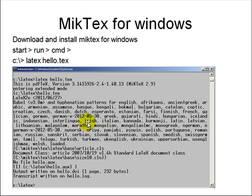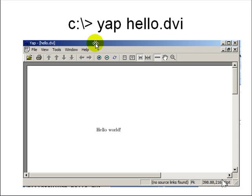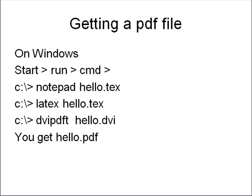LaTeX shows hyphenation for all known languages, reads the style sheet for the article type, tells you what kind of document you have, then says 'no aux file hello' — the auxiliary index file wasn't there, so it wrote one. It writes the output to hello.dvi, one page, about 300 bytes — really small. The log file contains details and error messages, saved as hello.log. To see the DVI file, you type 'yap hello.dvi' and you see 'Hello World' laid out on a page.